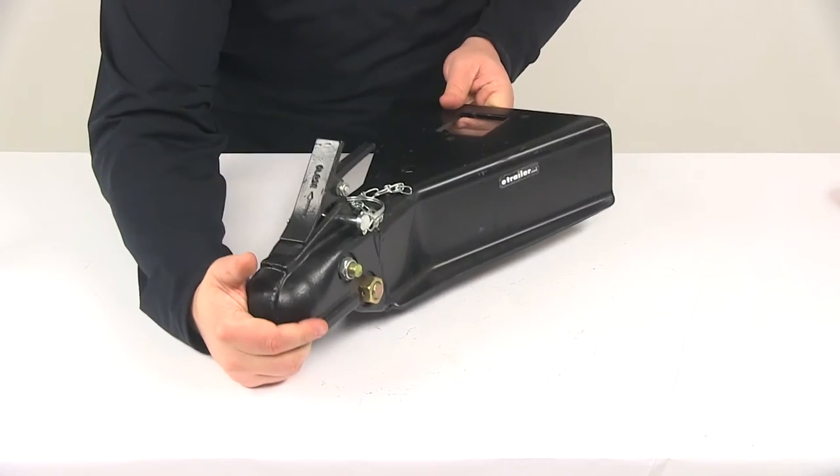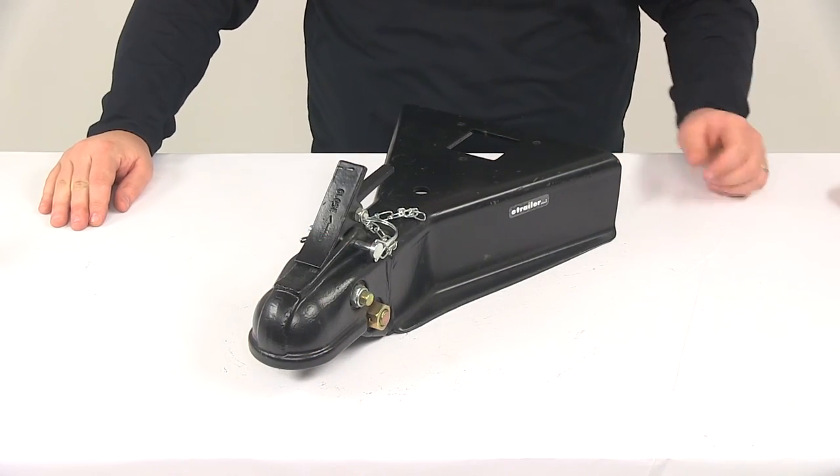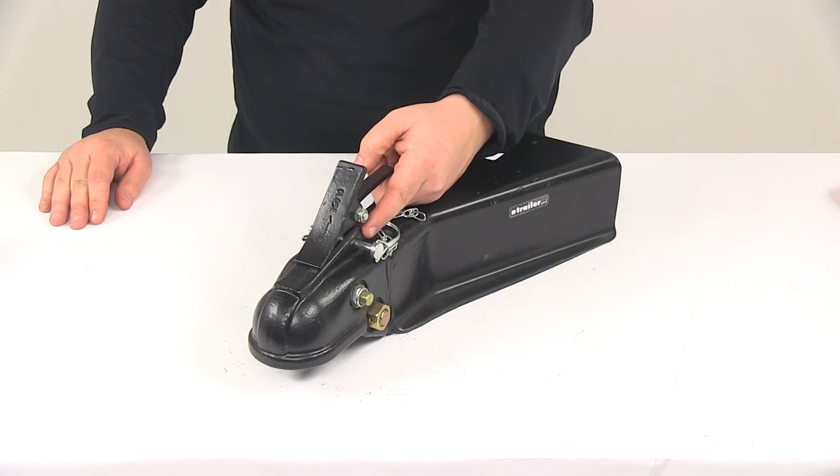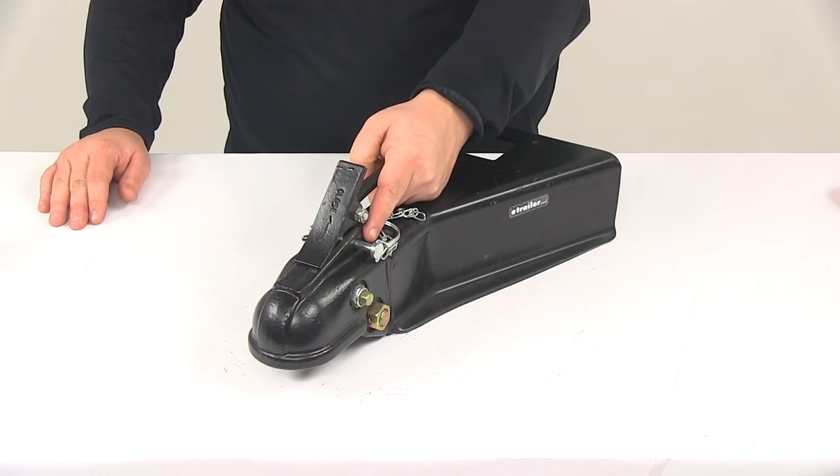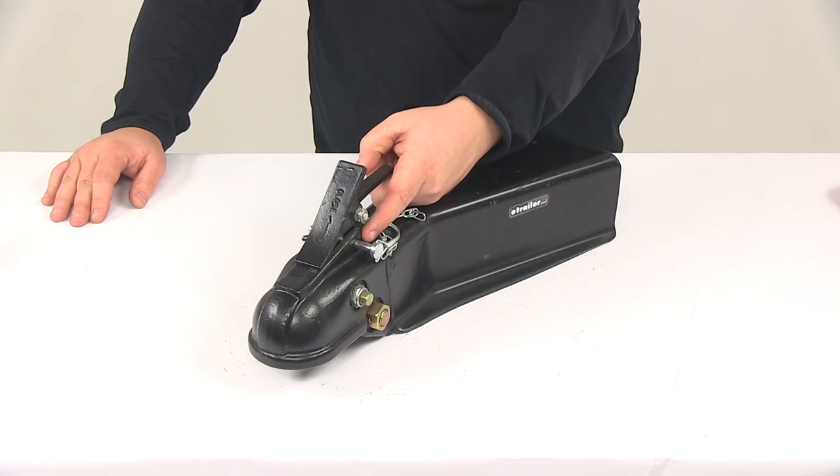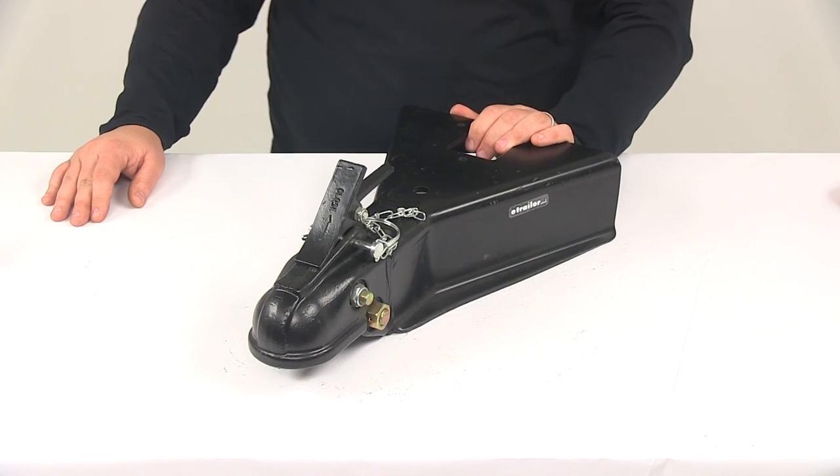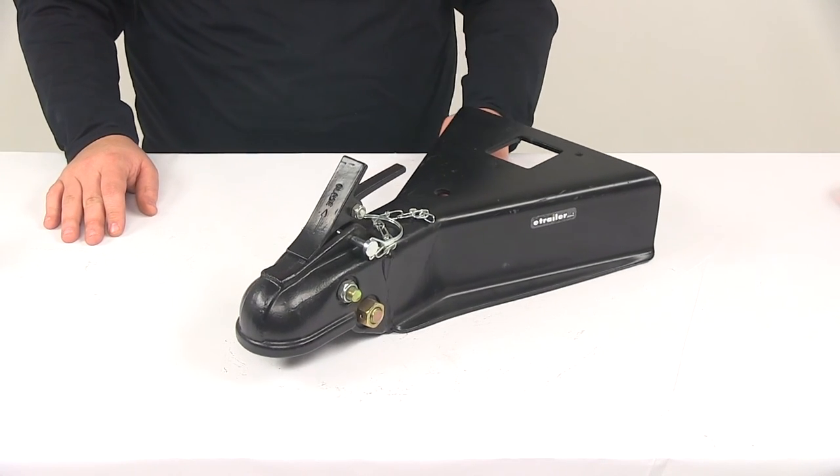Now the pin that's included with the coupler, it can be replaced for a locking pin or a coupler lock. The diameter of that pin hole is going to measure five sixteenths of an inch and then the minimum span needed or the usable pin length on a coupler lock would need to be an inch and a quarter. If you're in need of a coupler lock, they are sold separately and you can find them right here at eTrailer.com.